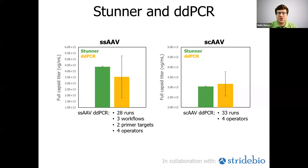Now, looking at genome titers in collaboration with StrideBio, we've compared Stunner versus DDPCR results for two AAV types, single-stranded AAV on the left and self-complementary AAV on the right. The genome titer of the single-stranded AAV sample was characterized using a robust variety of DDPCR experiments to best capture the titer. All the tight error bars on Stunner come from a single run of triplicate samples. For the self-complementary AAV sample on the right, the optimized DDPCR protocol was used and compares very favorably to quantification by Stunner.